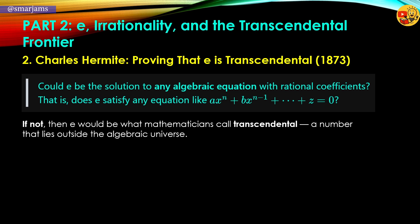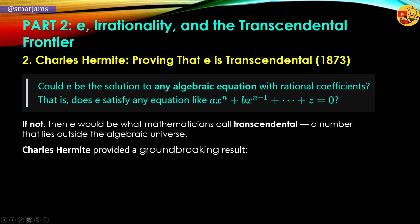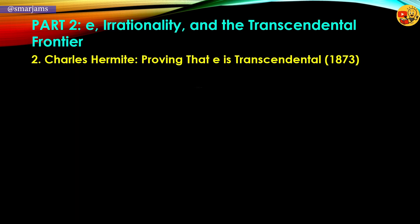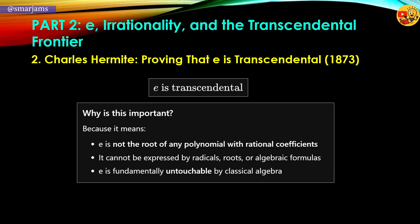If not, e would be something even rarer: transcendental — a number that doesn't just escape fractions, it escapes all of algebra. In the year 1873, French mathematician Charles Hermite proved that e is transcendental. In other words, e does not satisfy any algebraic equation with rational coefficients. It cannot be built from roots, powers, or algebraic expressions. Hermite had shown that e lies beyond algebra itself, a number completely outside the classical universe of equations.